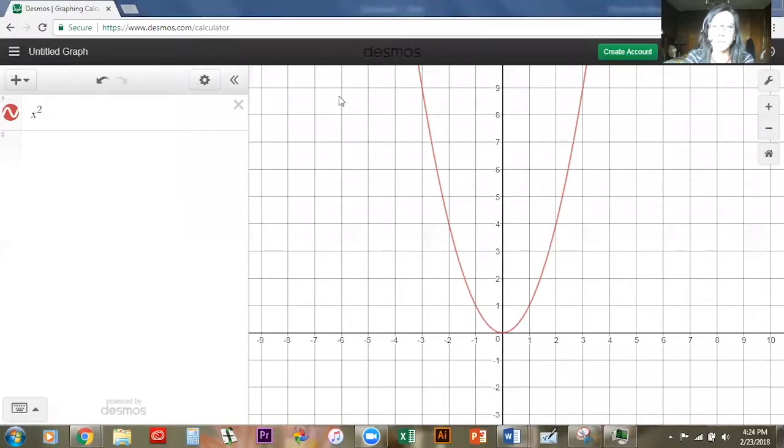I tell my classes that these are the three most important points for them to show on the graph, which is the vertex and then one point at least on each side of the vertex.